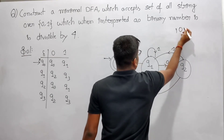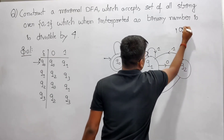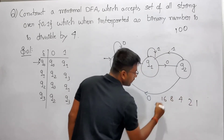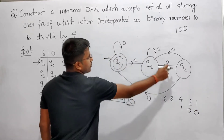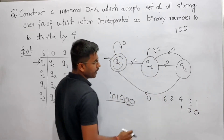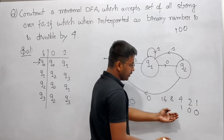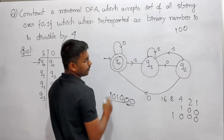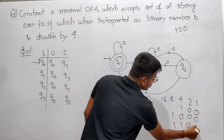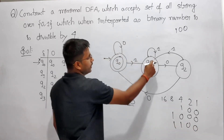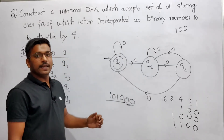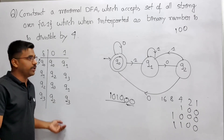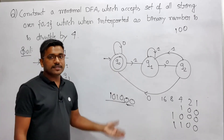Verifying: 4 in binary is 100 — accepted. 8 in binary is 1000 — accepted, ends with two 0s. 12 in binary is 1100 — ends with two 0s, accepted. Any number of 0s also accepted. This confirms that the shortcut method gives a correct but non-minimal DFA. For a minimal DFA, this three-state construction is the answer.